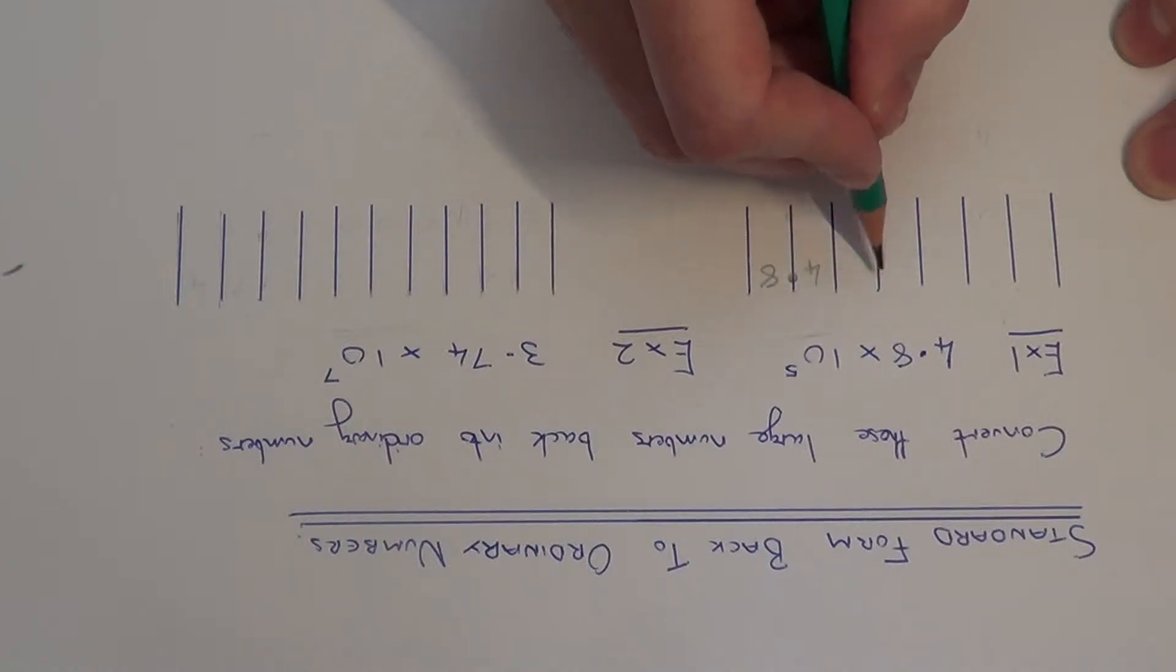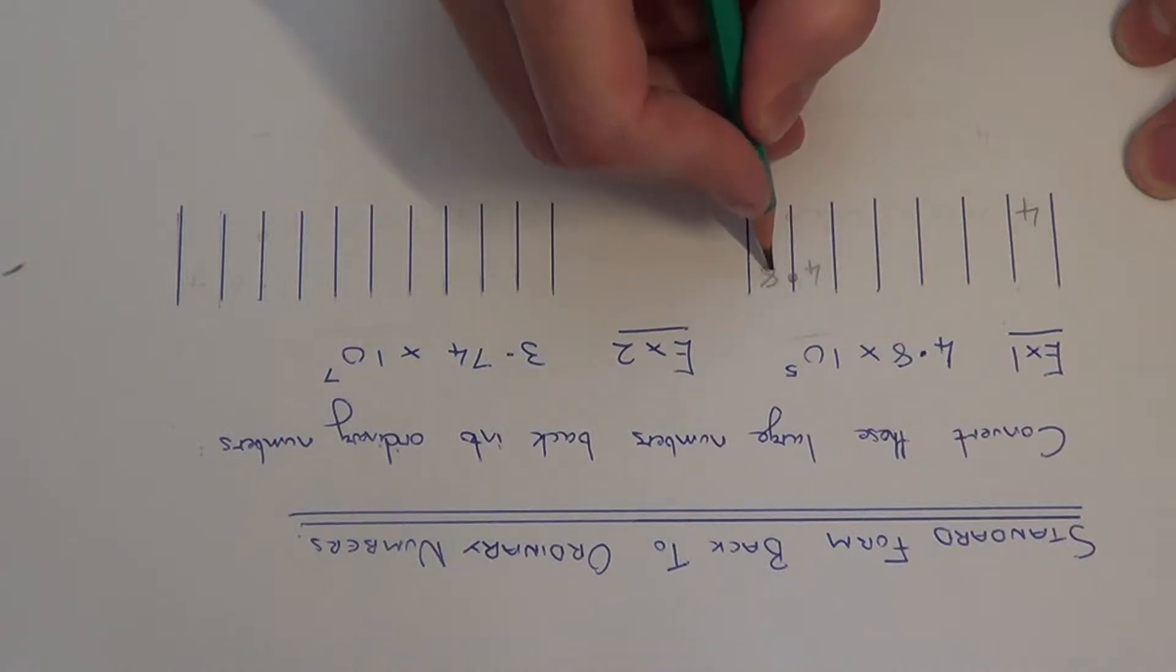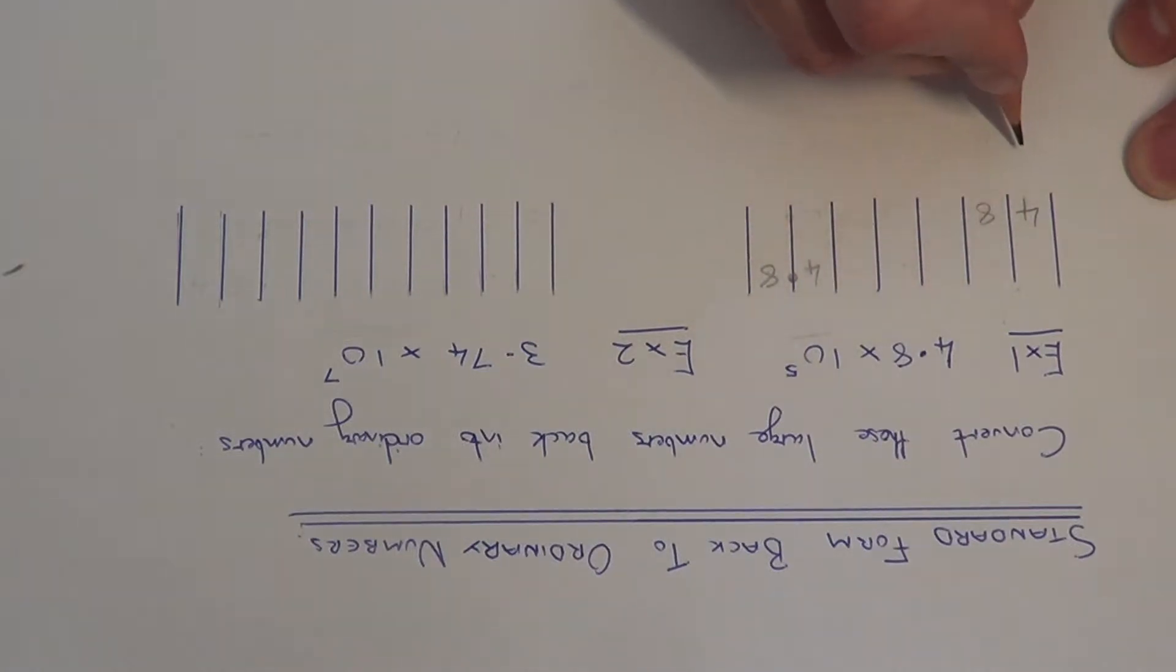So the 4 goes 1, 2, 3, 4, 5. Drop the 4 here. The 8 will go 1, 2, 3, 4, 5. Put the 8 there.